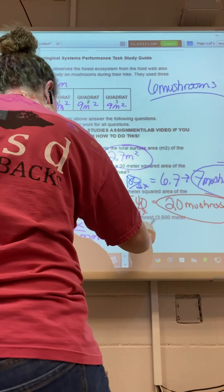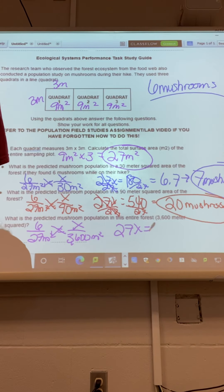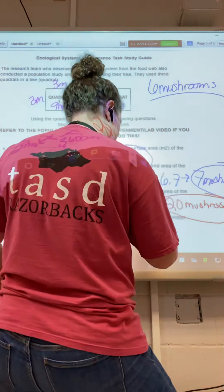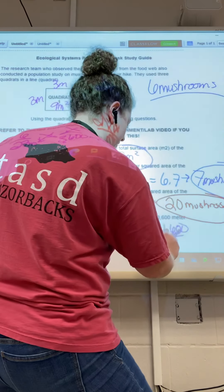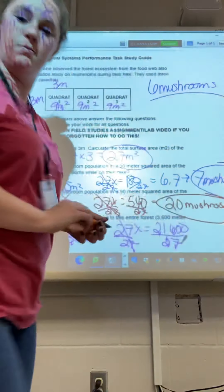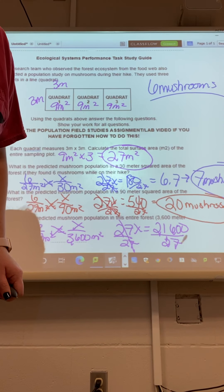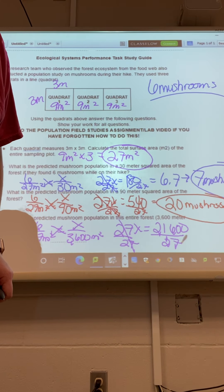27x equals 21,600. Divide by 27. Divide by 27. 800.